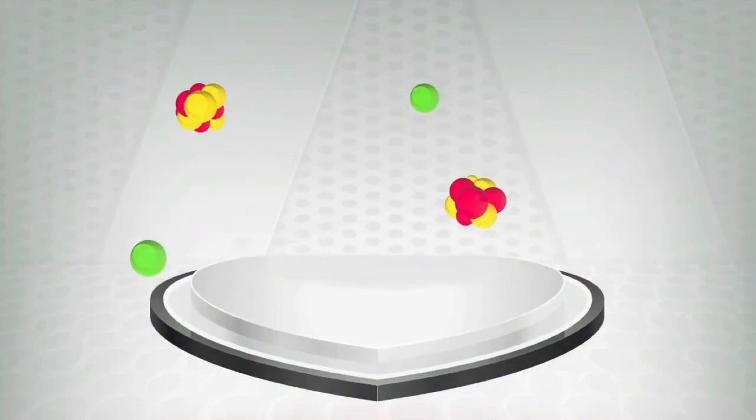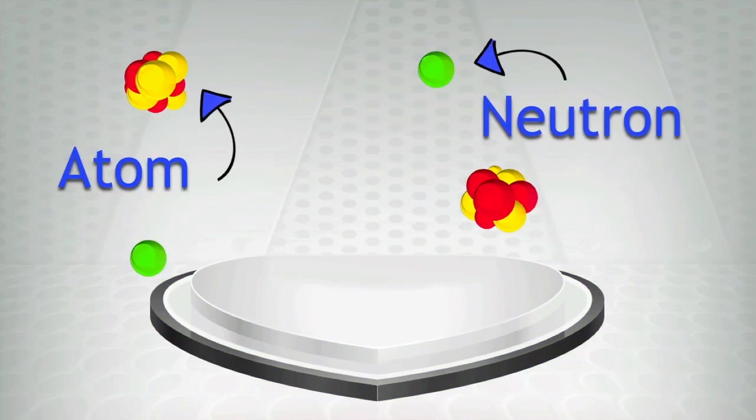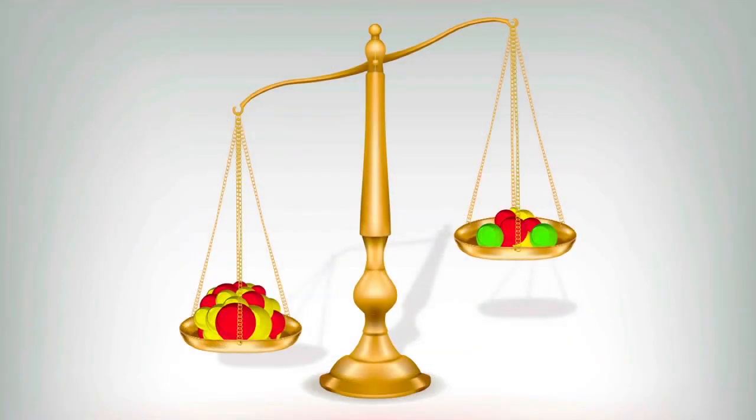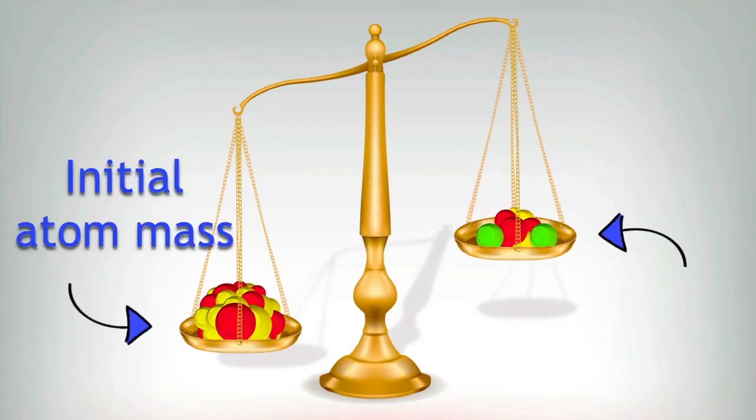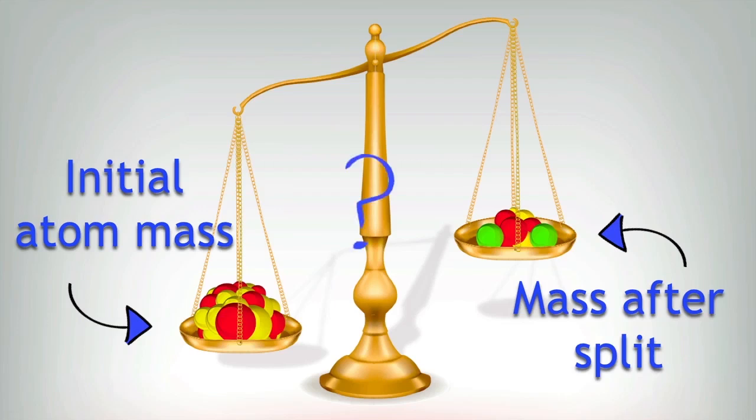They split into smaller atoms and a number of neutrons. If we measure the mass of the initial atom and the total mass of the products after the split, there seems to be a discrepancy. Some mass seems to be lost.